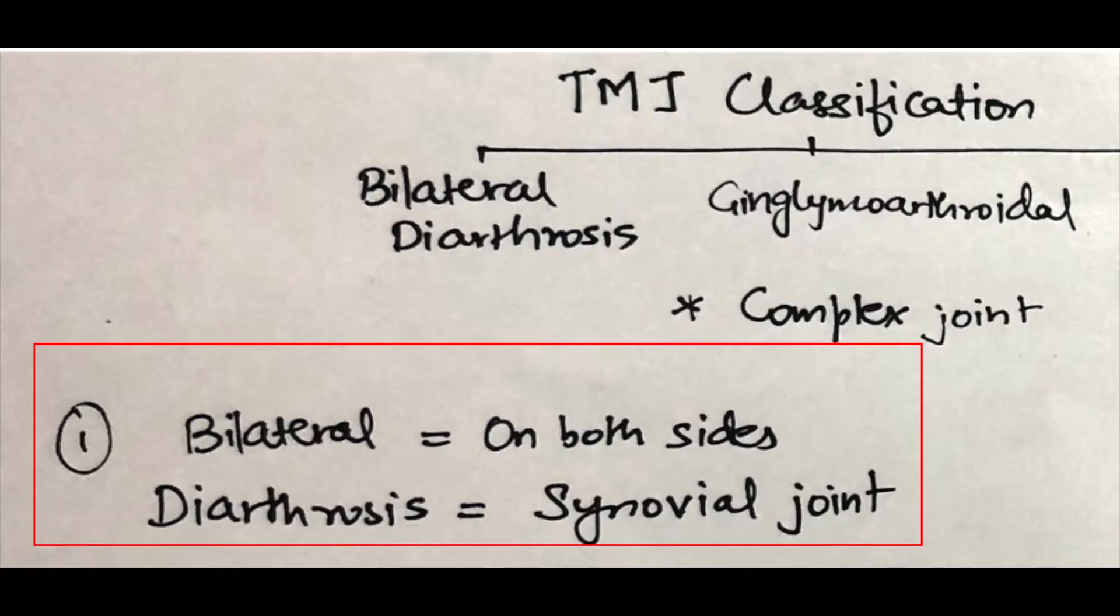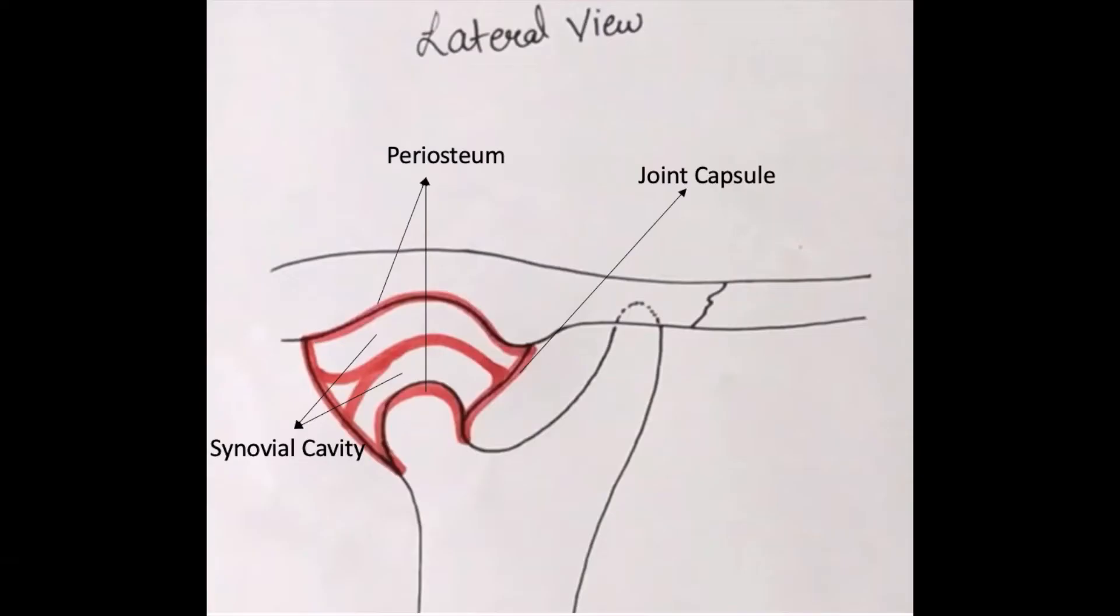The first one is bilateral diarthrosis. Bilateral because it's present on both sides and they function together. Diarthrosis meaning synovial joint. A synovial joint joins the bone with a fibrous joint capsule that is continuous with the periosteum of the joint bones.